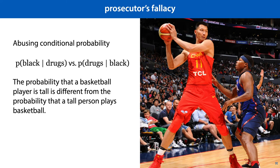To help you understand, consider a more extreme example of the prosecutor's fallacy. Let's imagine that you're trying to find professional basketball players. The probability that somebody is tall given that they play professional basketball — P(tall | basketball) — is almost precisely 1. Thus, if you're looking for professional basketball players, you are justified in only asking tall people. However, the probability of somebody playing professional basketball given that they're tall is still extremely low. That means that if you go around asking tall people whether they are professional basketball players, you'll end up bothering a lot of people before you find your basketball player, and probably annoying quite a few of them.